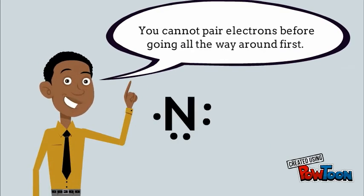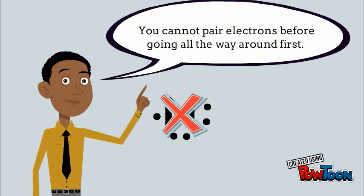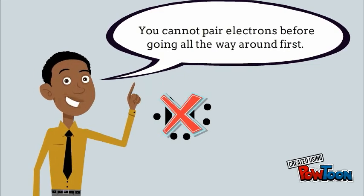You cannot pair electrons before going all the way around first. So in this case, you have two sets of paired electrons, and that's not going to work.